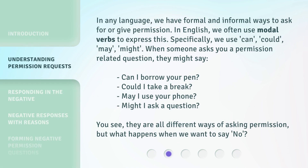In any language, we have formal and informal ways to ask for or give permission. In English, we often use modal verbs to express this. Specifically, we use: can, could, may, might. When someone asks you a permission-related question, they might say: Can I borrow your pen? Could I take a break? May I use your phone? Might I ask a question? You see, they are all different ways of asking permission.